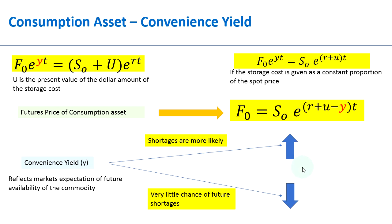For an investment asset, the convenience yield is zero. If there were a convenience yield for an investment asset, that would mean there are arbitrage opportunities. It doesn't make a difference whether you hold an investment asset now or in six months or one year's time, because there is no benefit of holding an investment asset now. Therefore, the convenience yield is zero.